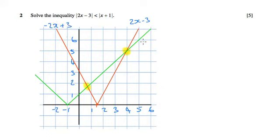This green line here is the normal x plus 1, and this is the negative: negative x minus 1.